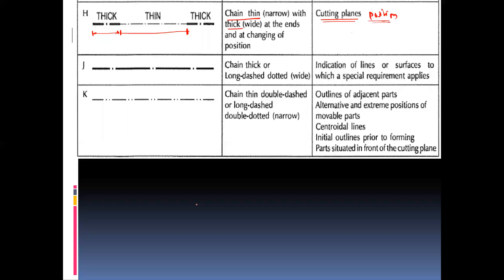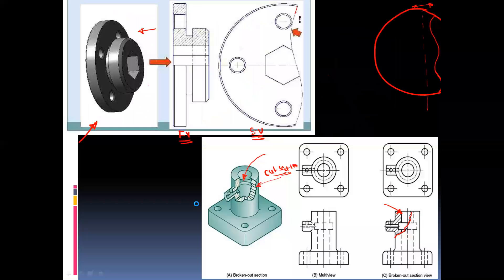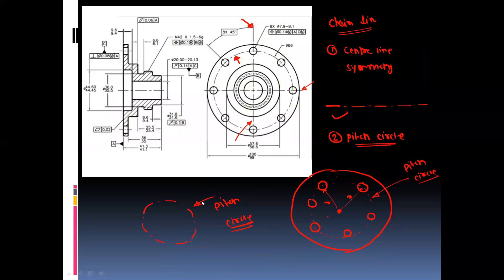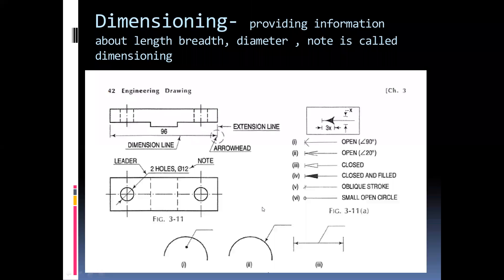These are the main types of lines that we are going to use to prepare the drawing. Now the next part is dimensioning. In dimensioning we provide information about the length, breadth, diameter, and any notes to be given about the feature. This complete part is called dimensioning.